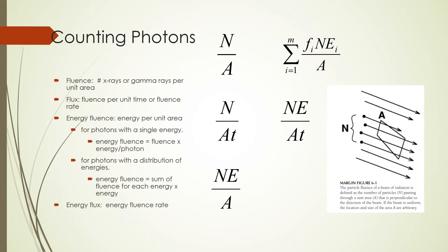Let's look at some of the terms that allow us to define the quantity of radiation passing through a medium. Suppose we have a beam of radiation depicted in the figure on the right. The beam is made up of n particles passing through an area A of some material. We can define fluence as the number n of particles per area, given as n divided by A. For a uniform beam, the location and size of A is irrelevant as long as it is in the beam. If the beam is not uniform, then the fluence must be averaged over small areas defined for each non-uniform area of the beam that passes through that area.